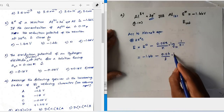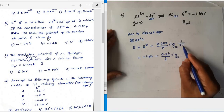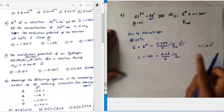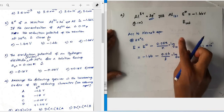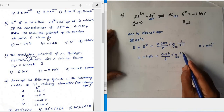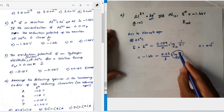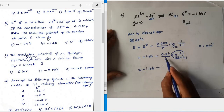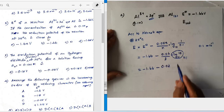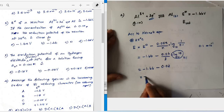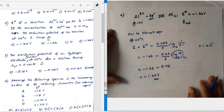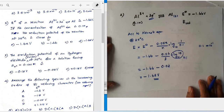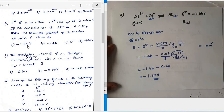Since 0.1 = 10⁻¹, placing it in the numerator gives 10⁺¹, and log₁₀(10) = 1. Therefore E = −1.66 − (0.06/3) × 1 = −1.66 − 0.02 = −1.68 V. This is the reduction potential for this reaction.